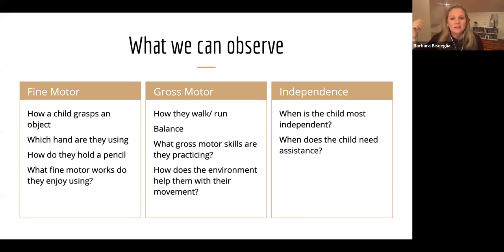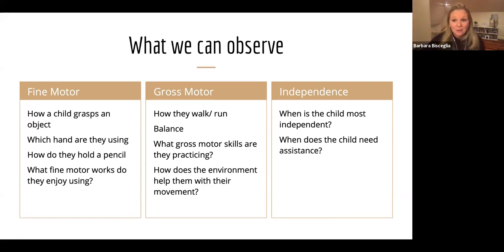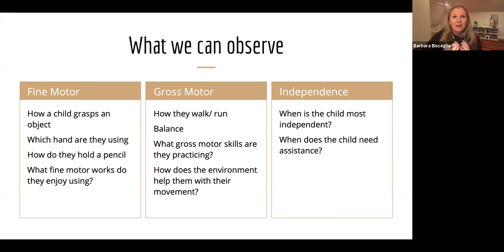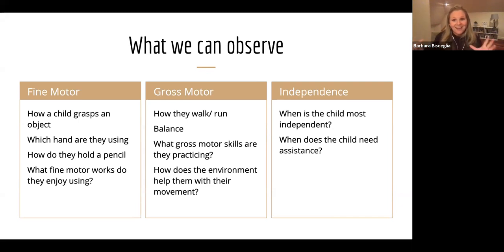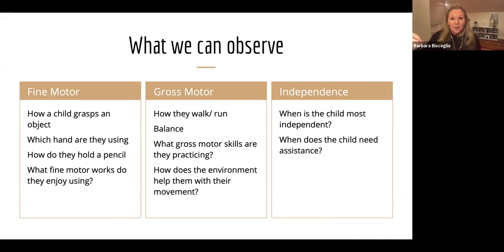You could look at independence — when is the child most independent or when do children need the most assistance? Those observations, if you're looking from that lens, will give you information on how you can make your environment more independent and what you need to do to help the child. For example, if a child needs a lot of assistance with hand washing, you take it step by step to help them be independent through the smaller steps of that big task. But you have to first observe that they need that assistance before you can put a plan in place.